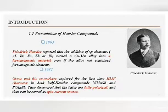In 1903, Friedrich Heusler reported that the addition of sp elements turned a Cu-Mn alloy into a ferromagnetic material even if the alloy not contained ferromagnetic elements. After that, in 1982, de Groot and his co-workers explored for the first time half-metallic ferromagnetic character in both half-Heusler compounds, NiMnSb and PtMnSb. They discovered that these are fully polarized and thus can be served as spin current source.